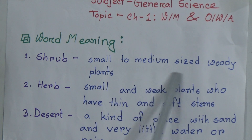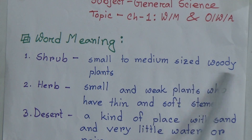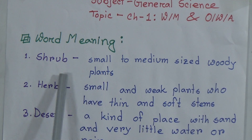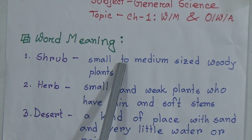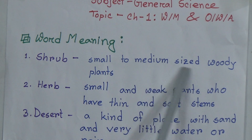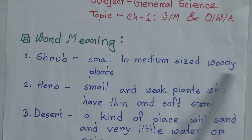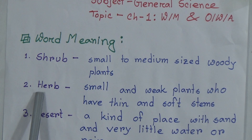First word meaning: shrub. The meaning of shrub is small to medium sized woody plants.